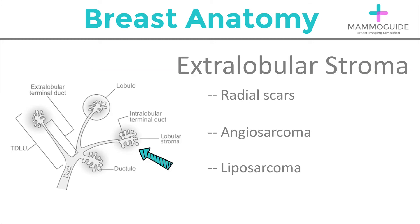Surrounding the lobule, you have some supporting structures known as extralobular stroma. Within the extralobular stroma, you can have a few fairly uncommon breast pathologies such as radial scars, angiosarcoma, or liposarcoma.